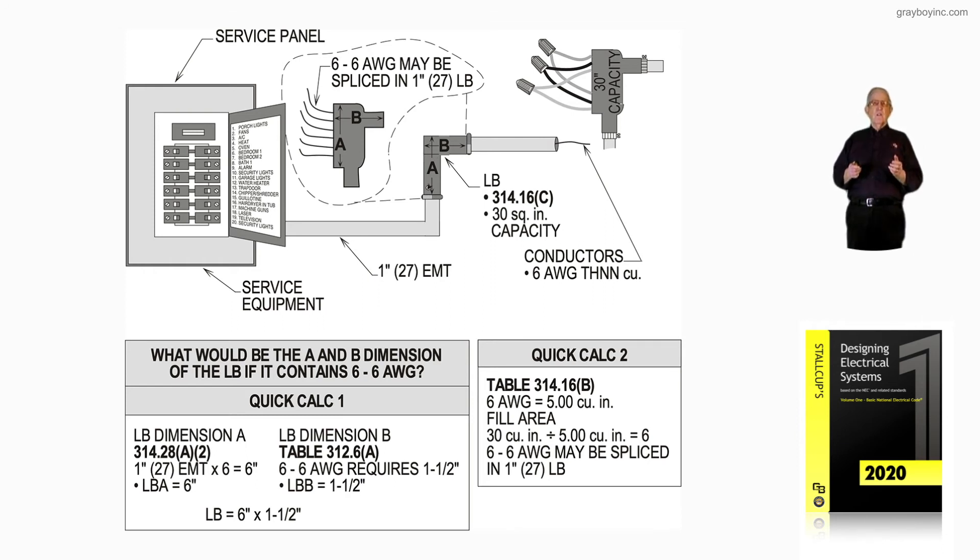Now, you notice in the illustration, you have six number six AWGs may be spliced in a one inch LB and then you have your A and B dimensions that it's calling for in quick calc one. Quick calc two is just showing that the conductors could be spliced there as long as the LB is listed as okay to do that.